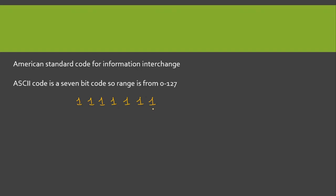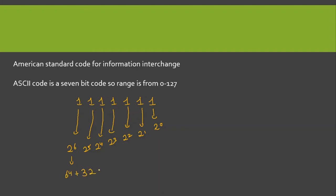Starting from the right, this is 2 power 0, this is 2 power 1, this is 2 power 2, this is 2 power 3, this is 2 power 4, this is 2 power 5, and this is 2 power 6. So 2^6 = 64, 2^5 = 32, 2^4 = 16, 2^3 = 8, 2^2 = 4, 2^1 = 2, 2^0 = 1. If we add all these up we get 127.